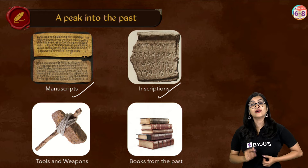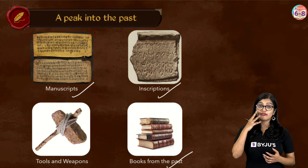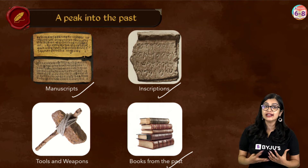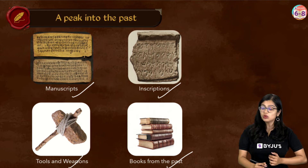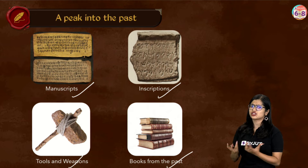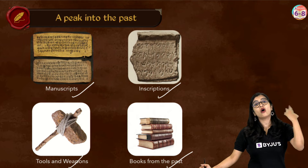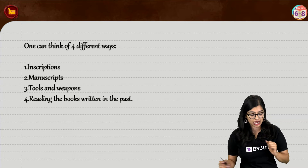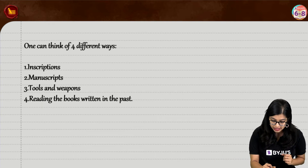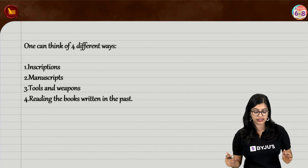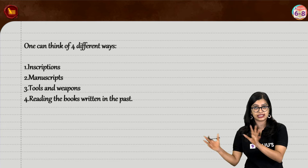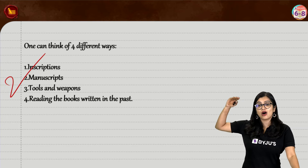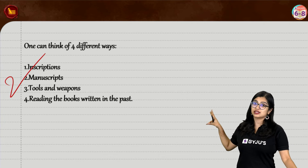There were many books written about the past with the help of historians. We also know that when archaeologists excavate and find objects, tools and weapons are among the things they normally find, which tells us what kinds of tools and weapons were used way back then and how people survived. So four different ways we find out about our past: inscriptions, manuscripts, tools and weapons, and books written about and in the past. Write all these pointers and you will get two marks easily.